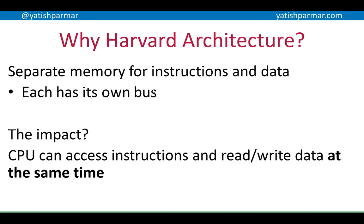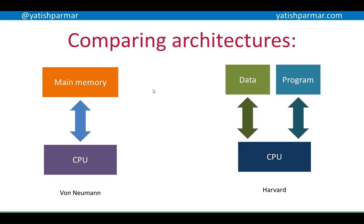Harvard architecture links up to RISC processors in the way it's set up. RISC CPUs use Harvard architecture — not exactly classical Harvard architecture, but an evolved version of it. In a modern computer you don't have physically separate memory; you've just got the RAM, and then storage which you load programs from into RAM for execution. So it's changed slightly, but the classical view is separate memory for instructions and data, therefore avoiding the bottleneck.